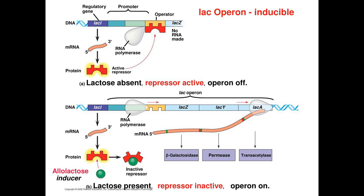Well, first, the binding of the repressor onto the operator isn't permanent. Also, the repressor is an allosteric protein, so in addition to the active site that binds to the operator sequence, there is also a regulatory, or allosteric, site where another ligand is able to bind onto. Here, the ligand is allolactose, an isomer of lactose. This allosteric binding alters the shape of the repressor protein, making it unable to bind onto the operator.